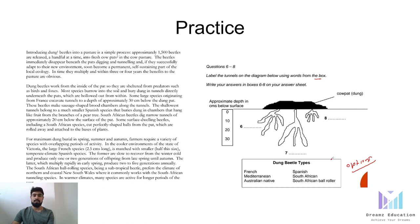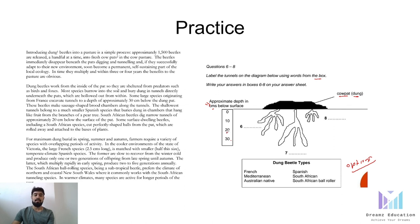Diagram completion questions may come with options or it can be without options as well. In this case, we have got the options. Write your answers in boxes 6 to 8. So we are supposed to identify parts 6, 7, and 8. Additional information given includes something like a cow pat — that is cow dung — and approximate depth in centimeters below the surface: 0, 10, 20, and 30 centimeters. Based on the scanning technique, we identify which paragraph this information belongs to. For those who missed the earlier class on scanning, skimming, and intensive reading, I have shared the link in the description box.